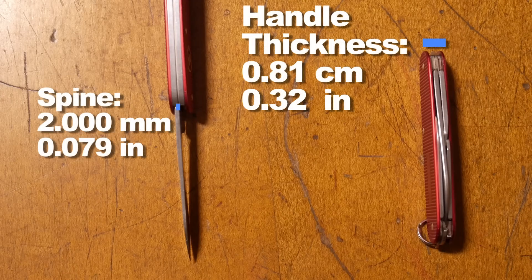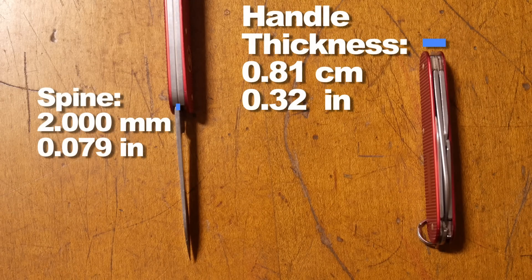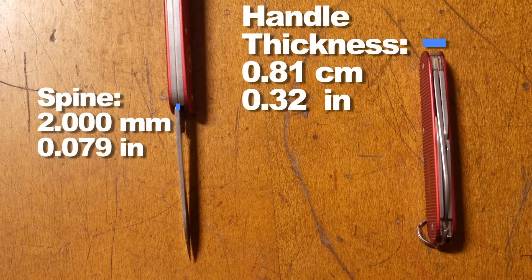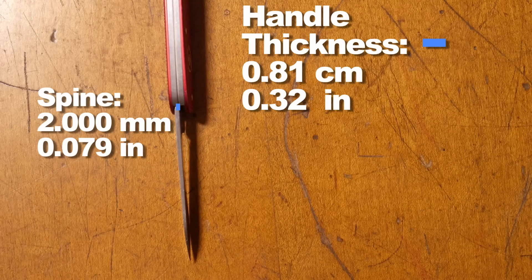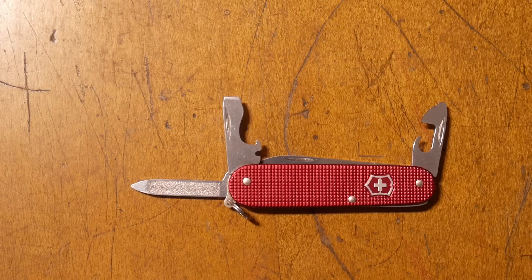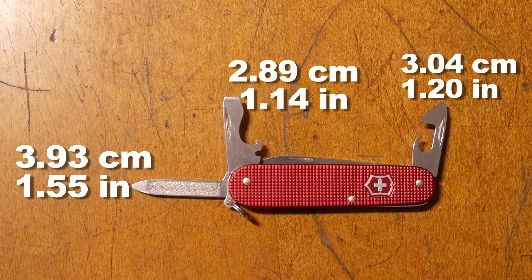Spine thickness, handle thickness, this is a pretty slim knife because of the aluminum or ALOX scales as Victorinox calls them. And finally the length of the tools. No blue lines, sorry.